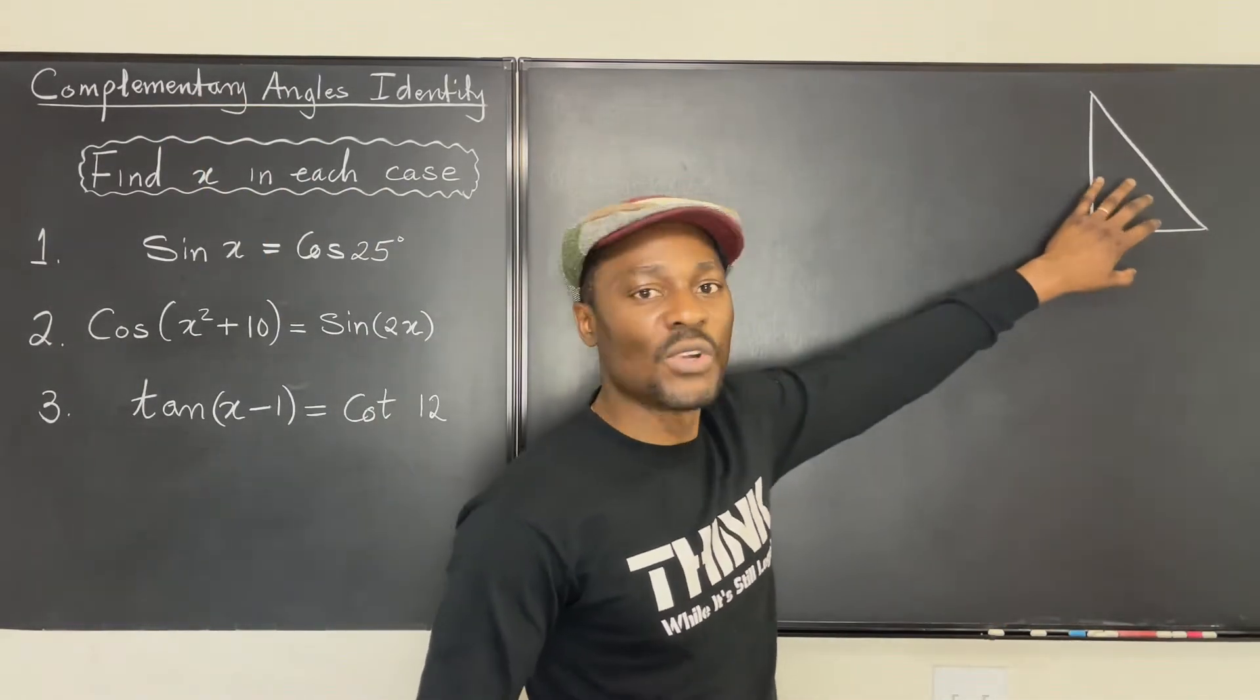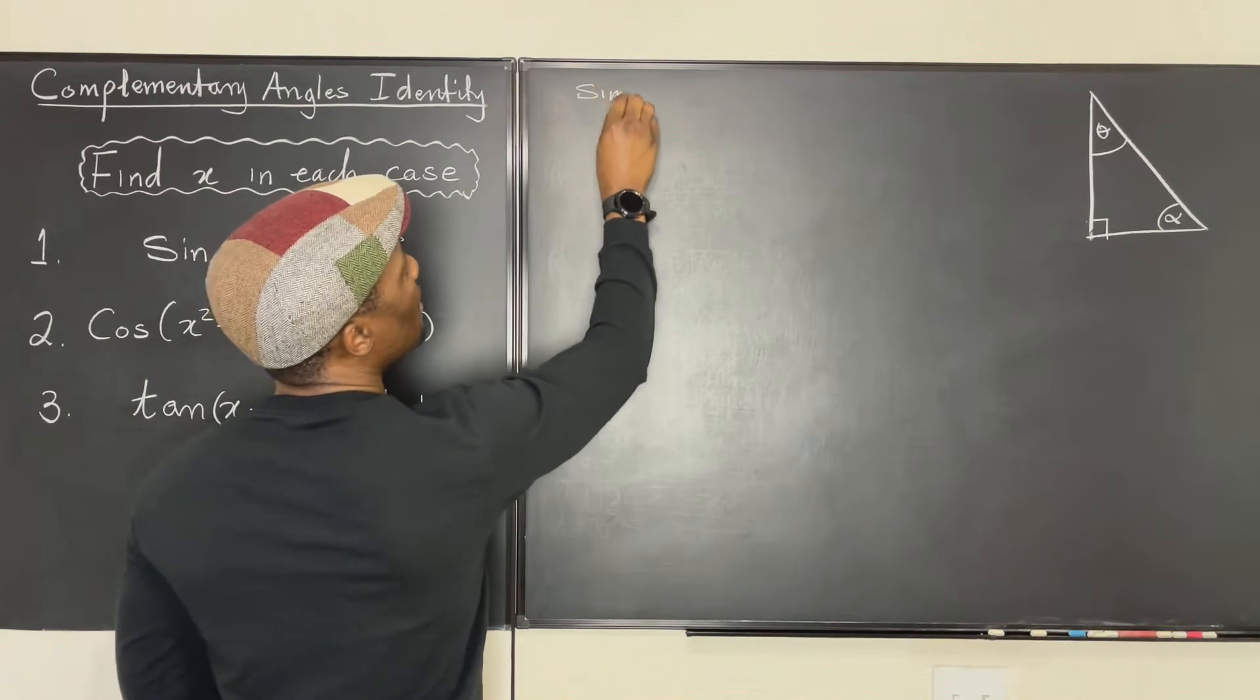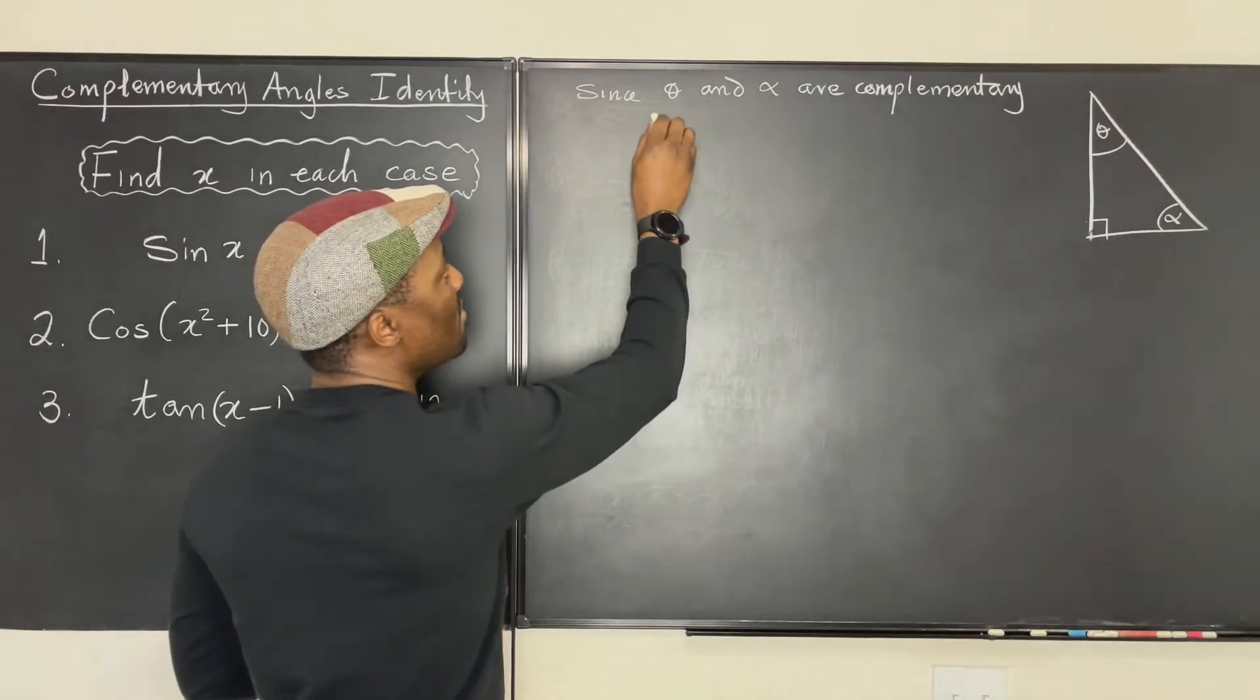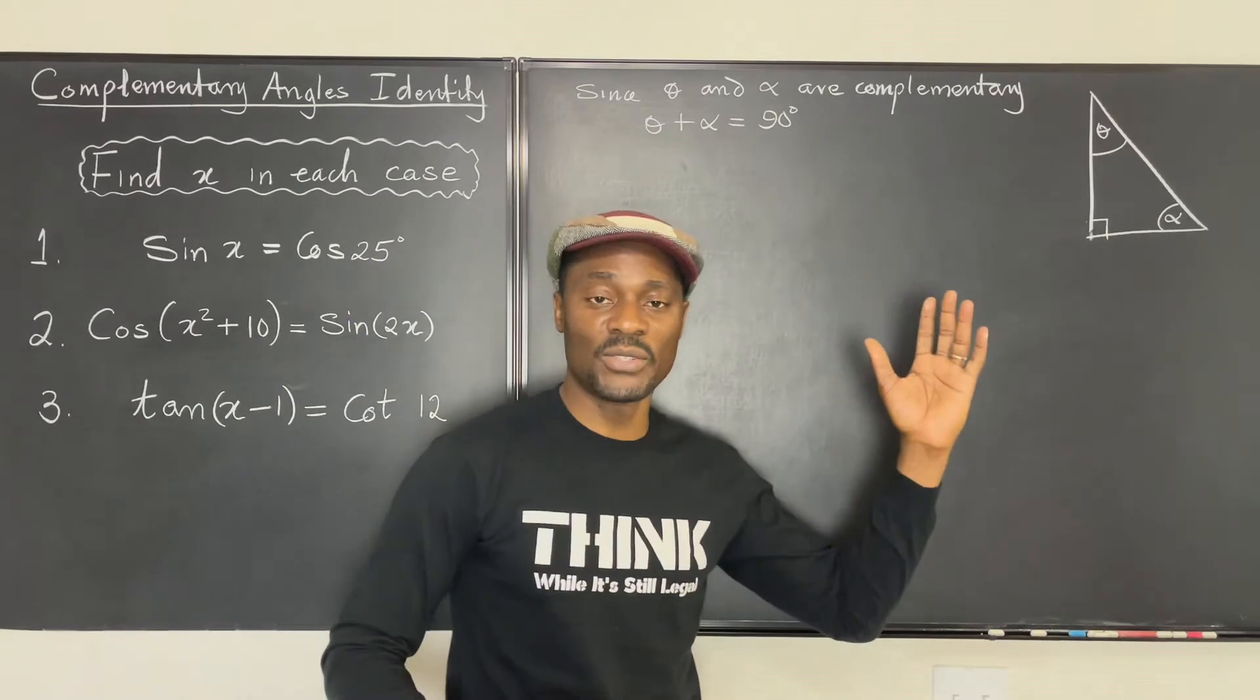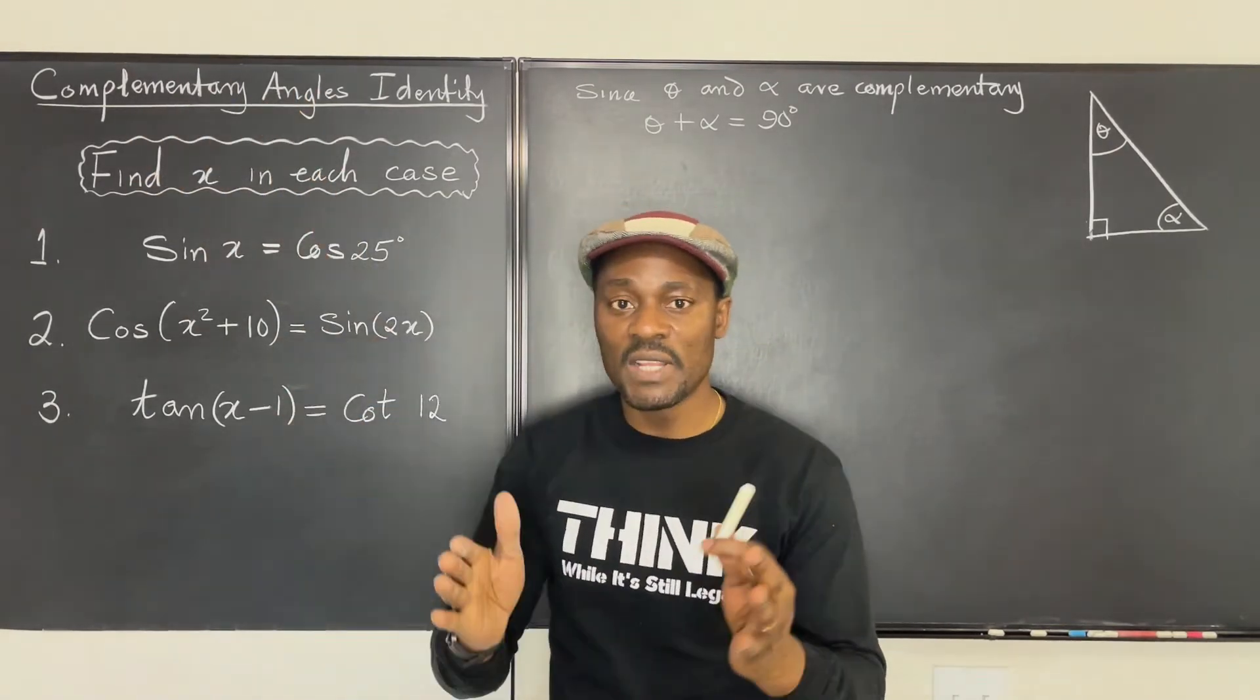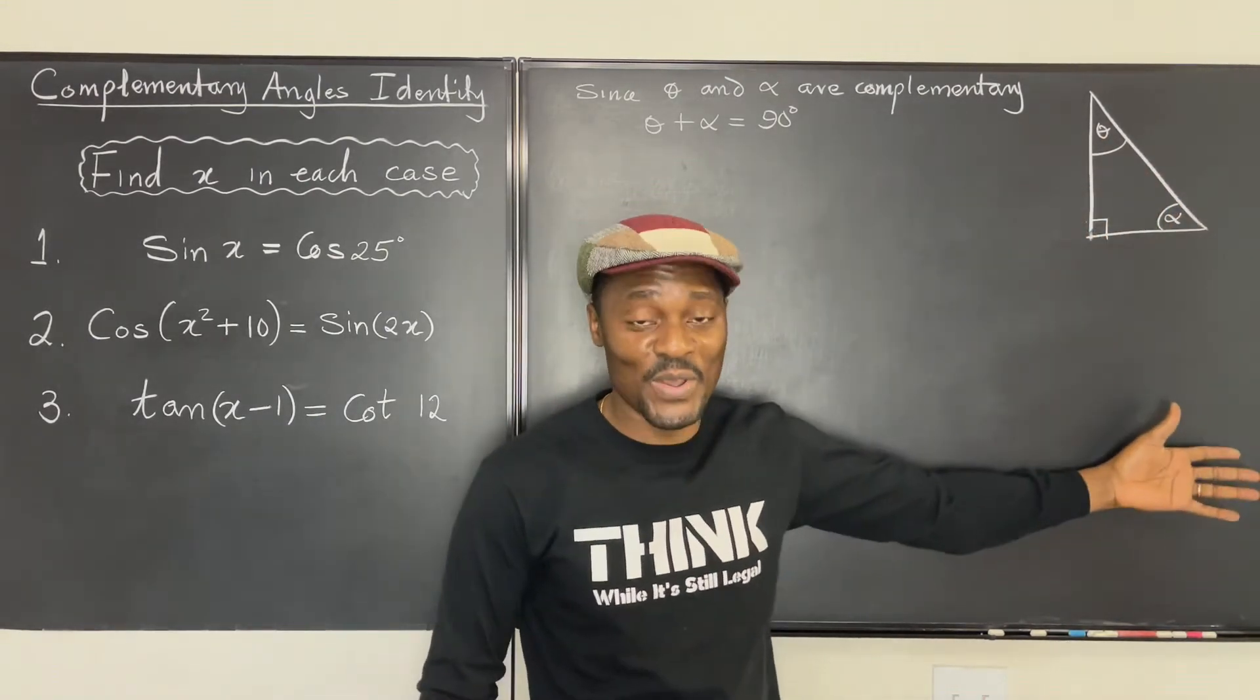And remember, sine, cosine, or tangent, everything is drawn from the right triangle. So if this angle is theta and this angle is alpha, we always know that since theta and alpha are complementary, it means that theta plus alpha will always be 90 degrees. Every time you have this kind of relationship, you'll always have them add up to 90 degrees.